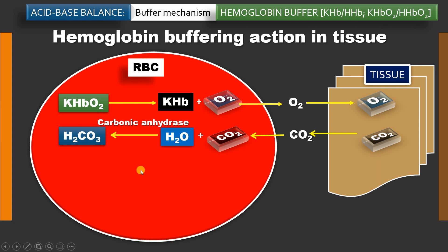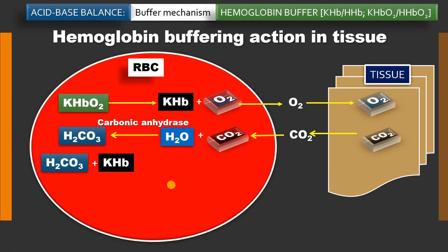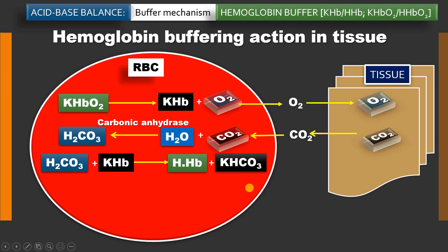Since there is more carbonic acid and there should not be any decrease in pH, this carbonic acid is immediately buffered by deoxyhemoglobin. Hemoglobin is a very good buffer because it contains about 38 residues of histidine, and histidine acts as a very good buffer because its pK value is about 7.3 — very close to physiological pH. The proton released from carbonic acid is immediately buffered by deoxyhemoglobin, releasing bicarbonate. Whatever excess proton is generated from carbonic acid is buffered by deoxyhemoglobin, resulting in accumulation of bicarbonate.